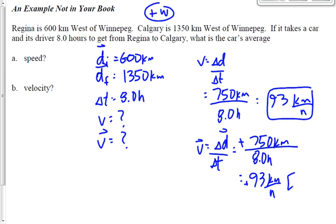Speed and velocity are numerically the same here because we haven't changed direction. Speed doesn't have a direction; velocity does. When driving down the highway, we usually care about speed. But if direction matters, we measure velocity.